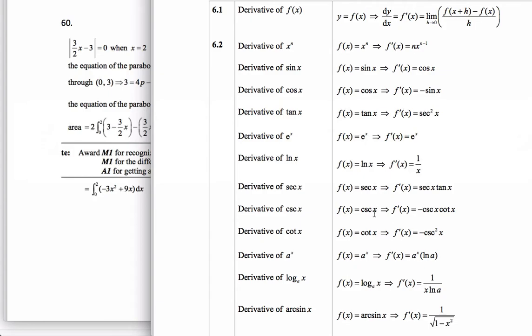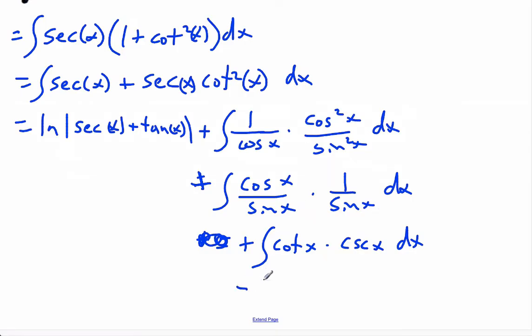So if we integrate that, we're going to get negative cosecant x plus c. The entire integral is ln absolute value of secant x plus tan x minus cosecant x plus c.